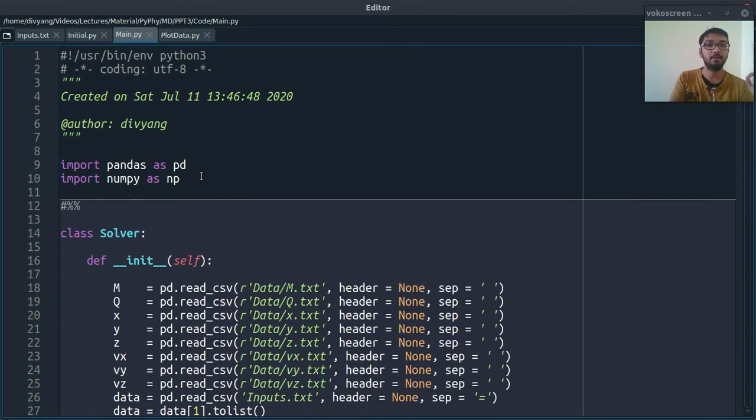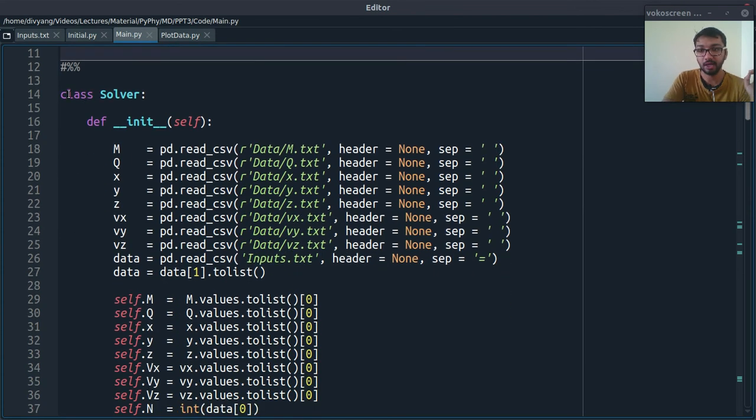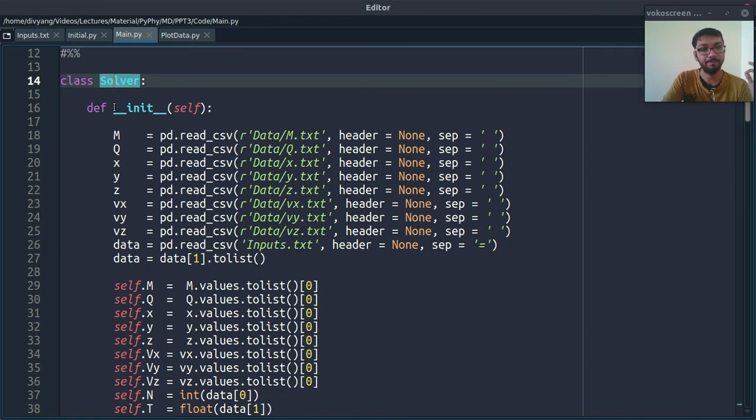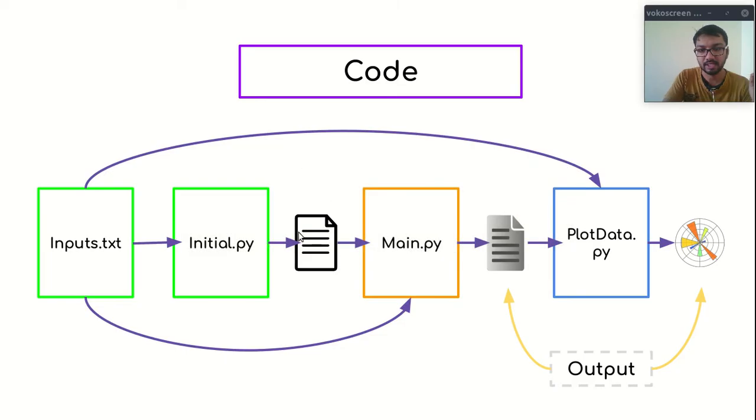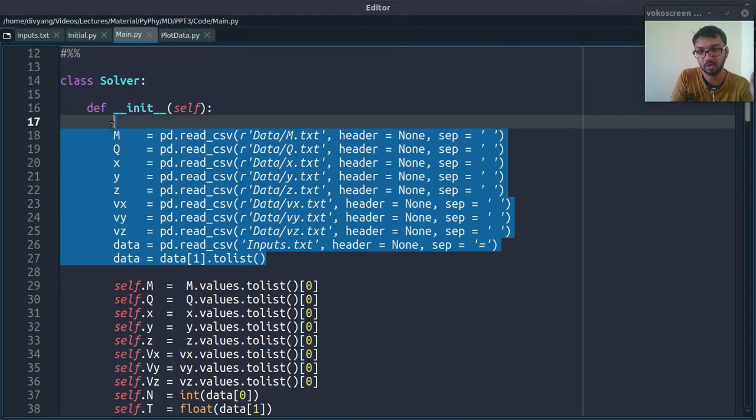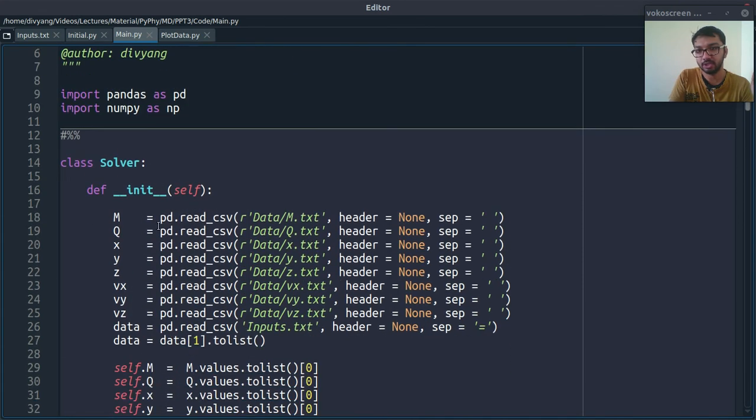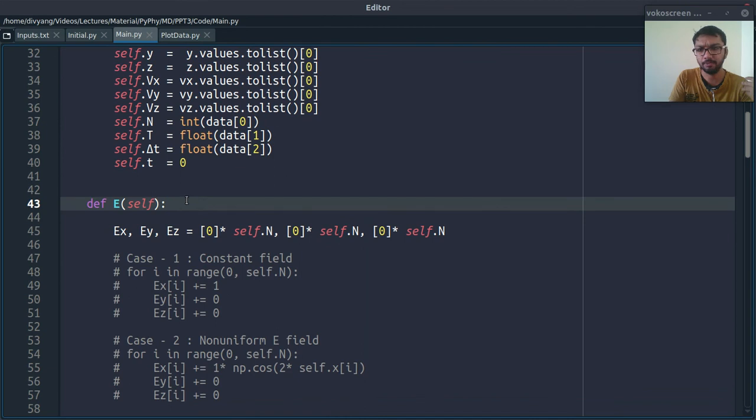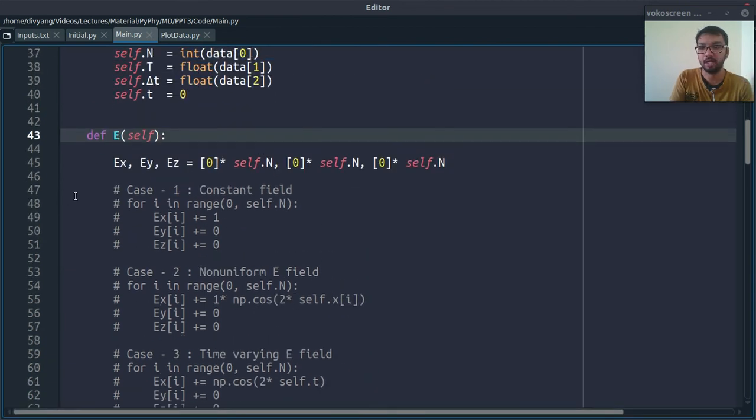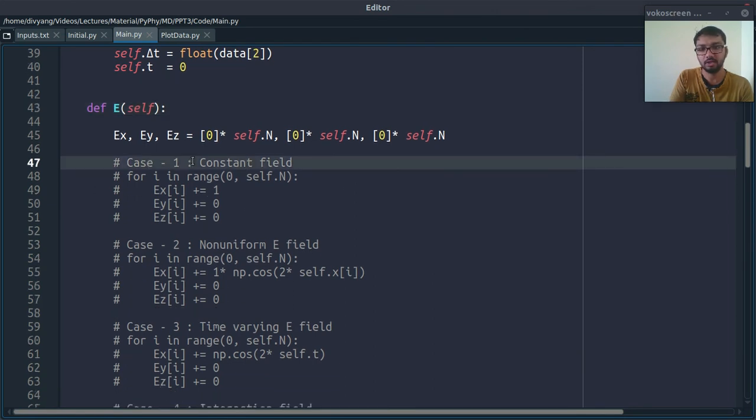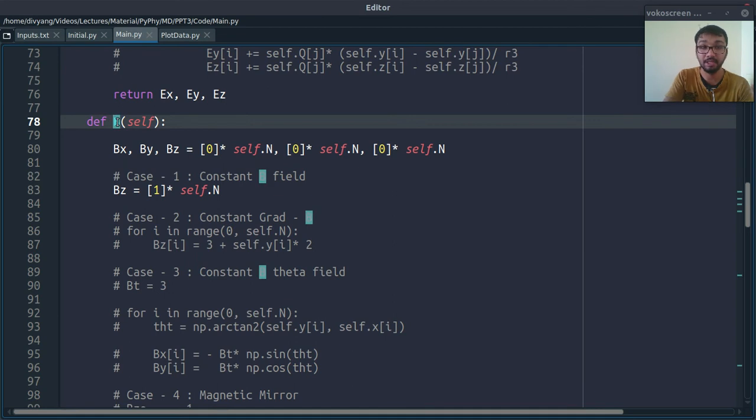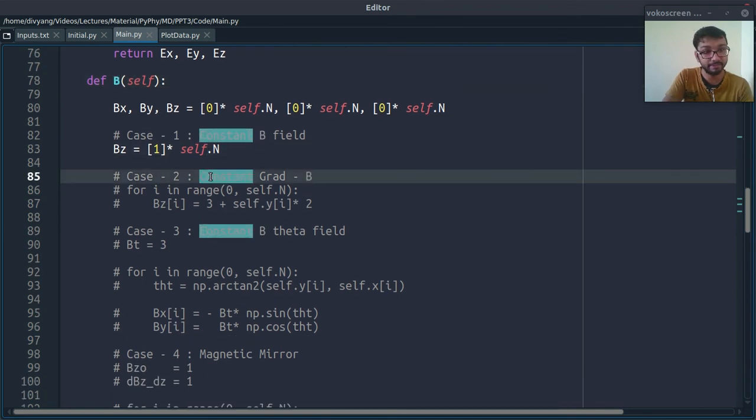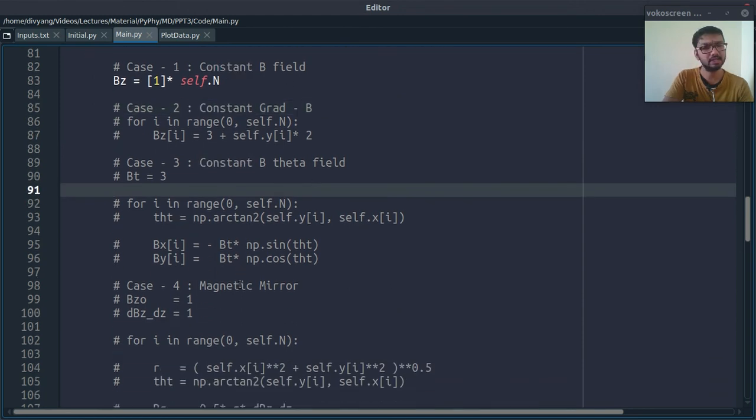Next is main.py file. And, in this file, I have created this solver class. And, in this class, first I will read these files with help of this code. This init function will read this data for me. And, then, this E function will create different field conditions. For example, constant field, non-uniform field. Then, this function, magnetic field or B, will create different kinds of magnetic field. Constant magnetic field, constant grid B, constant B theta field. These all examples we will discuss.